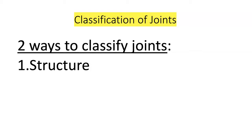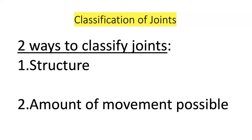Joints or articulations are just where two bones meet in the body. It's the way the various bones of the skeleton are connected together. There are two ways to classify joints: one is structural, and the other is by the amount of movement observed at the joint. Let's take a look at the structural classification first.